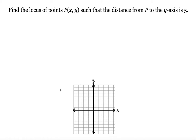Find the locus of points P(x, y) such that the distance from P to the Y-axis is 5. The locus of points means the set of all points P such that the distance from each of these points to the Y-axis is 5.